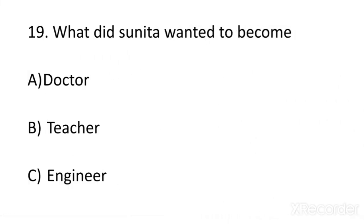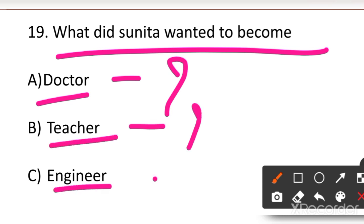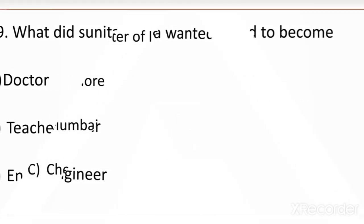Next question: what did Sunita want to become? Sunita Williams was an astronaut and engineer in the US Army. Your options are: A. Teacher, B. Doctor, or C. Engineer. They have also given a reason in the chapter for why she wanted to pursue that career, which has been covered in the worksheet and chapter discussion.